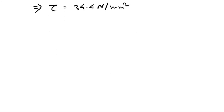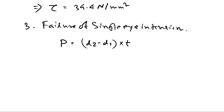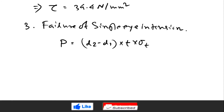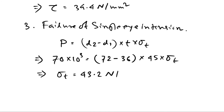Failure of single eye in tension. Using the equation: P = (D2 − D1) × t × σt. Substituting: 70 × 10³ = (72 − 36) × 45 × σt. Solving, induced tensile stress σt = 43.2 N/mm². This is less than the permissible tensile stress, so the single eye in tension is safe.